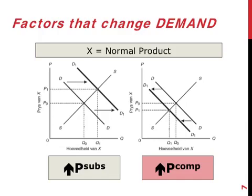In the case of complements — products that are used together — consider the cars and tires example. If cars suddenly get really expensive, fewer people will be driving. The end result is fewer people buying tires. The whole demand curve for tires moves towards the left, and the equilibrium price and equilibrium quantity are both lower.